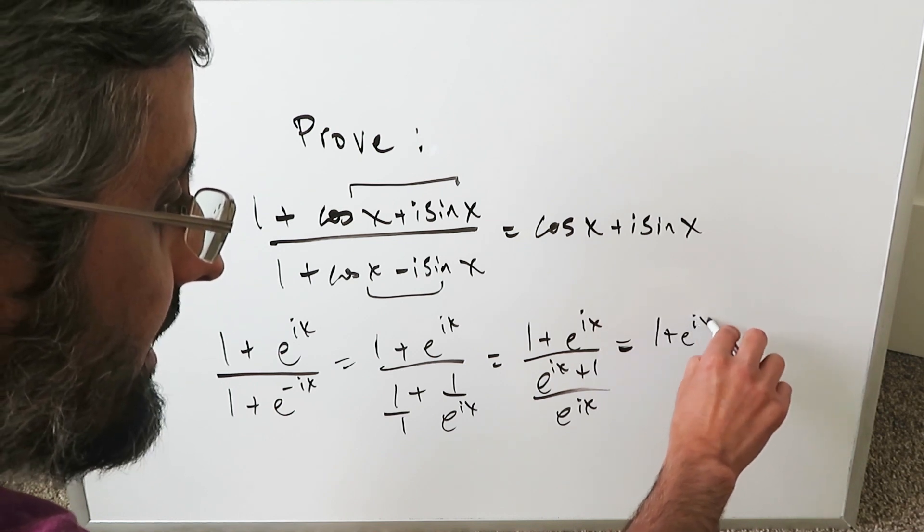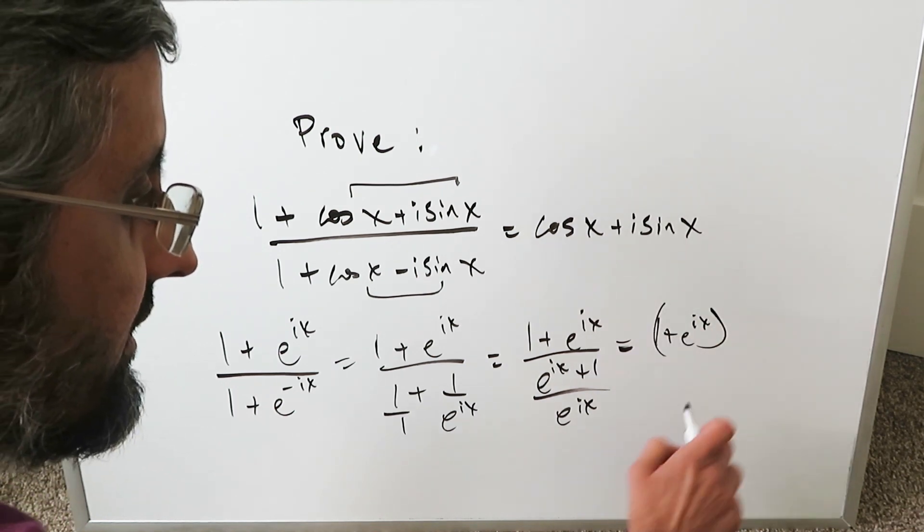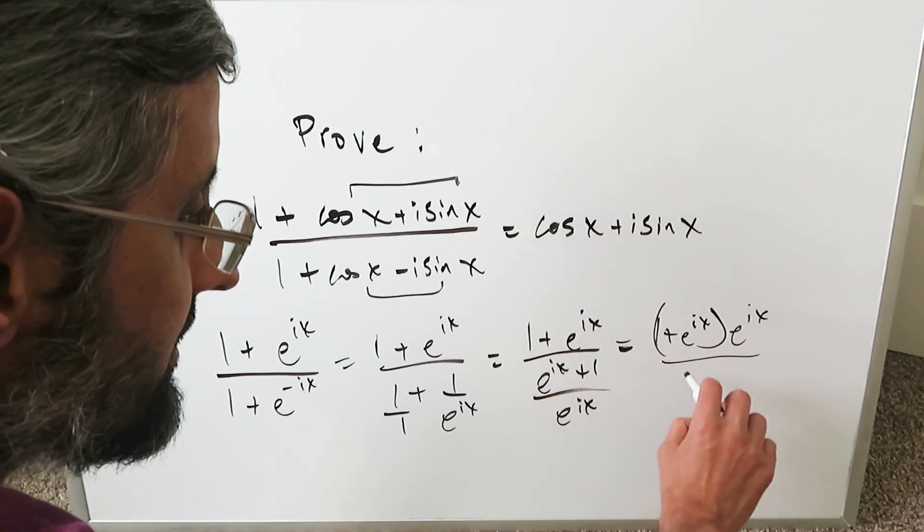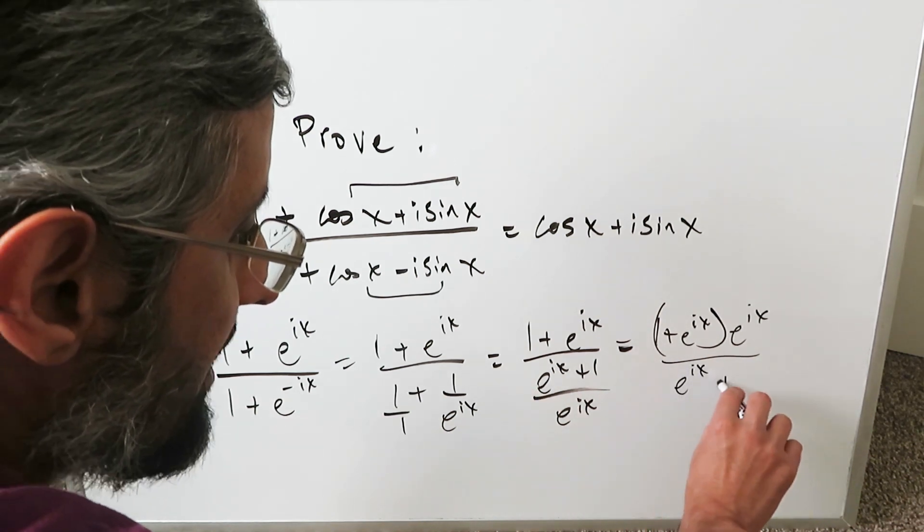I have (1 + e^(ix)) already in the numerator. This multiplies with e^(ix), divided by (e^(ix) + 1) in the denominator. These cancel out.